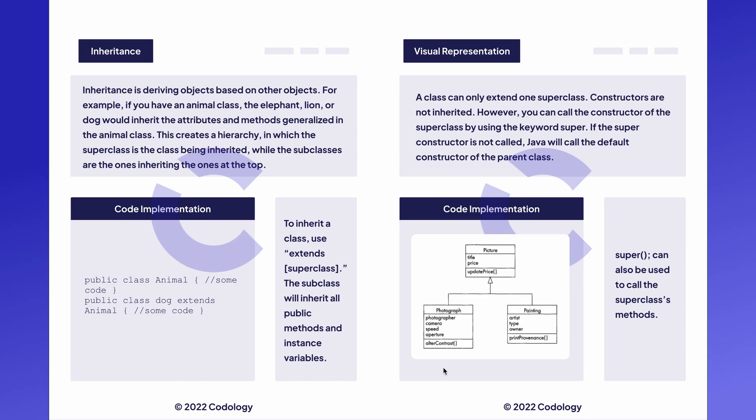It will not, however, inherit the constructor. Constructors will not be passed down to the subclass, but you can call the constructor of the superclass by using the keyword super. If the super constructor is not called, Java will call the default constructor of the parent class automatically. Super can also be used to call superclass methods as well.